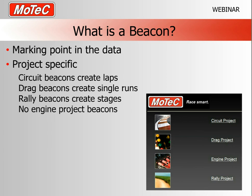Beacon behavior in i2 software is different depending on which project you're in. i2 is divided into four styles of racing. Circuit-based projects are designed for cars and things that traditionally go around some sort of circuit in a continuous loop. Drag racing involves one start beacon, and in the drag project there's the ability to put in incremental times — a 60-foot time, a thousand-foot time, an ET and elapsed time.